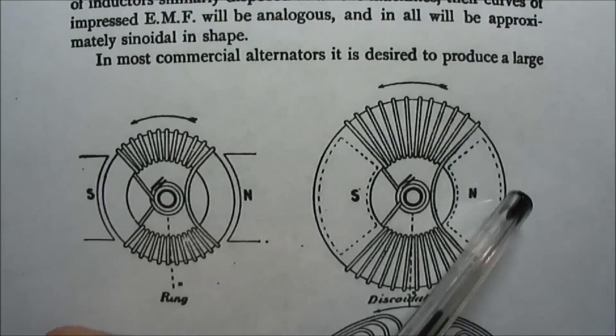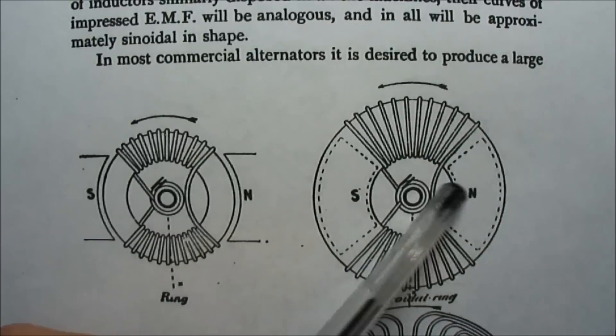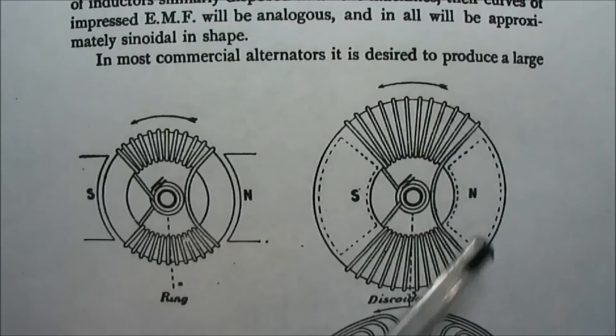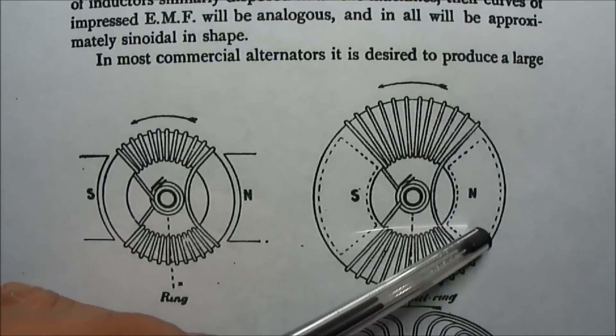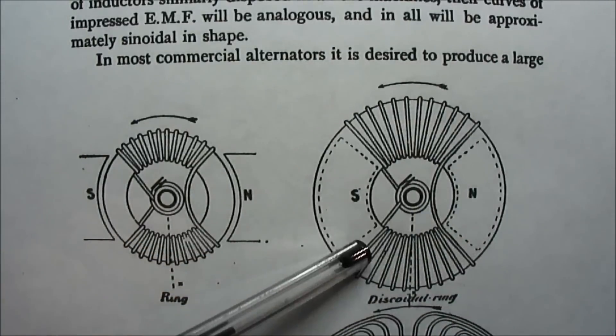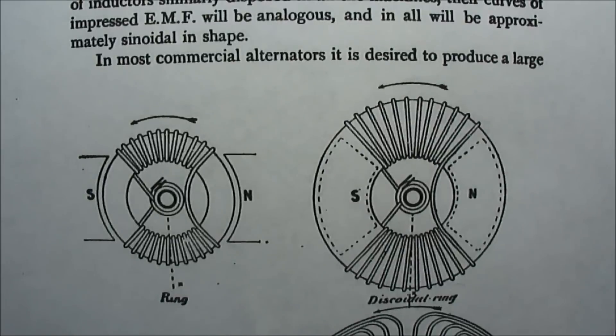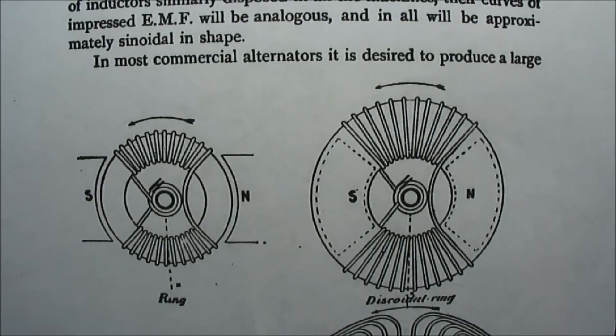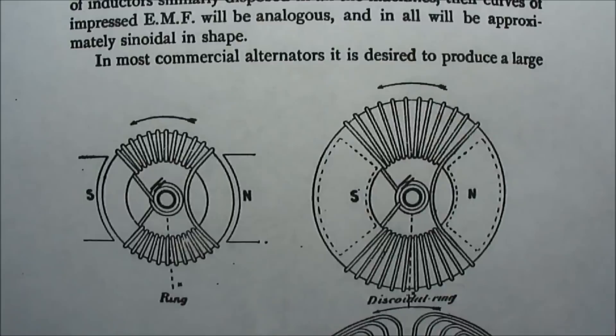That current is going to change direction as it passes the center point of the pole piece. The pole piece is considered the blank space between the coils. The distance of that blank space has a big effect on a generator's output.